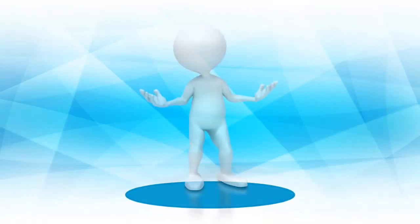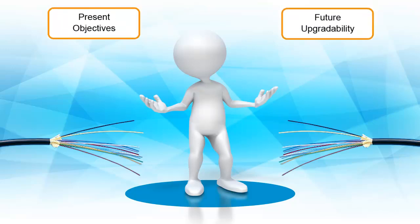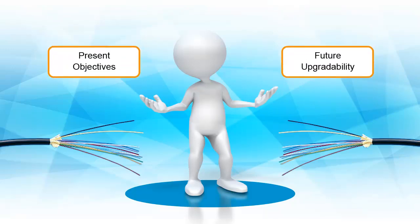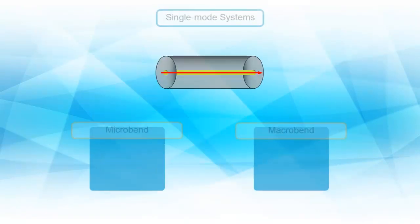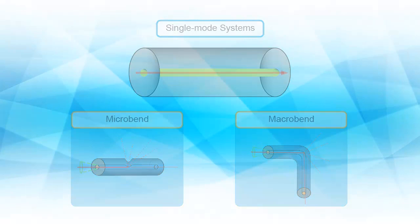The challenge is to choose a fiber with good performance over a wide range of system characteristics which satisfies both the present objectives and future upgradability requirements. Of the four attenuation factors, the susceptibility to bending-induced losses provides the most distinction between fiber designs for single-mode systems.